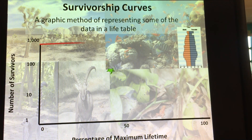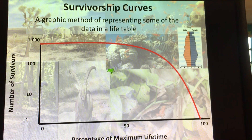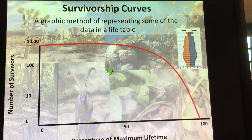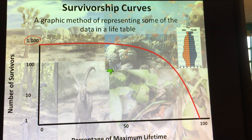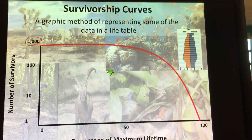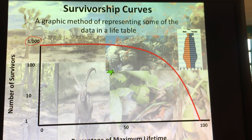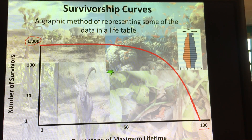You can see a line that forms like this. This is telling you that if I have 1,000 individuals born, the majority of them are going to live a long time. If you live 100% of your potential — so if our life expectancy in America is 80 years old — a lot of people make it to 80, a lot of people make it that far.